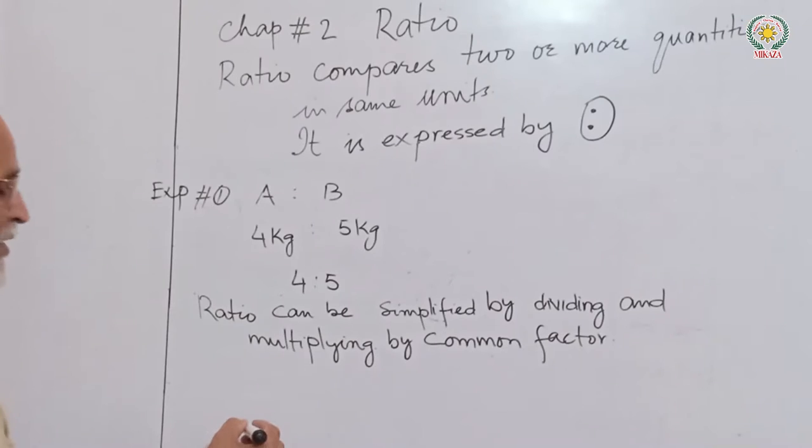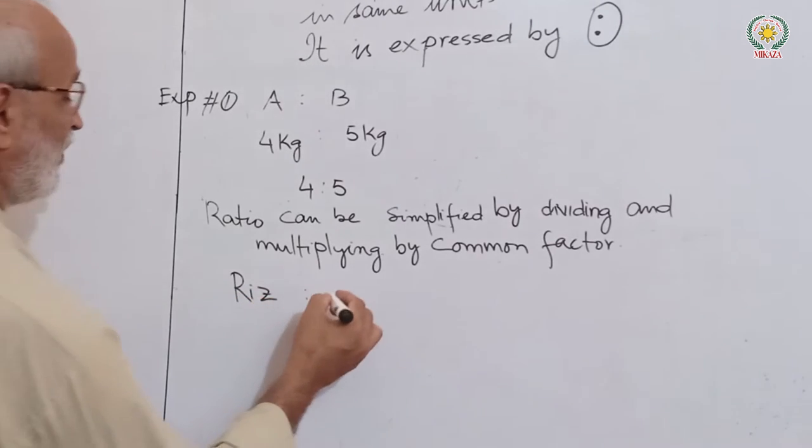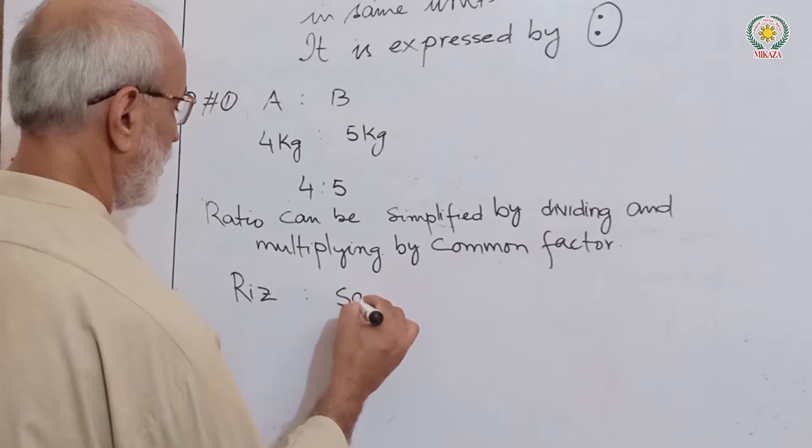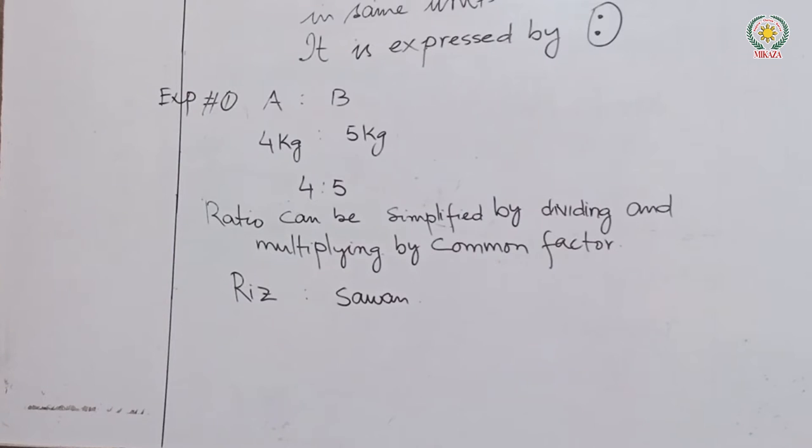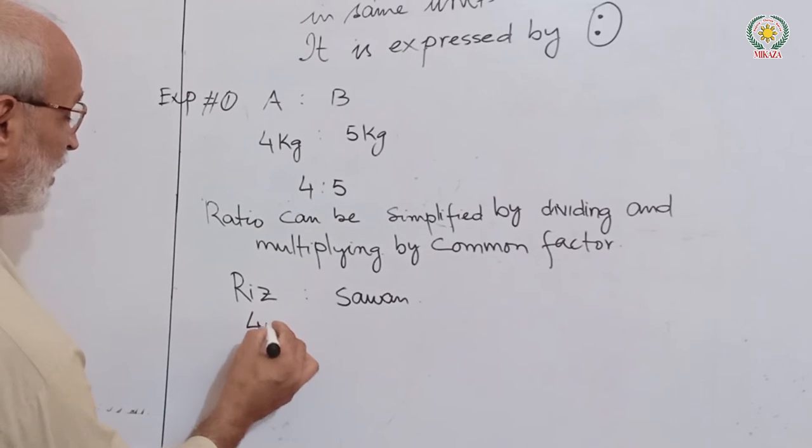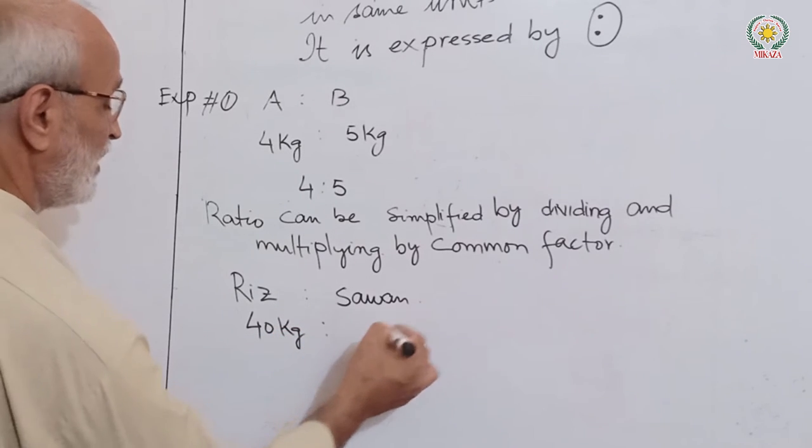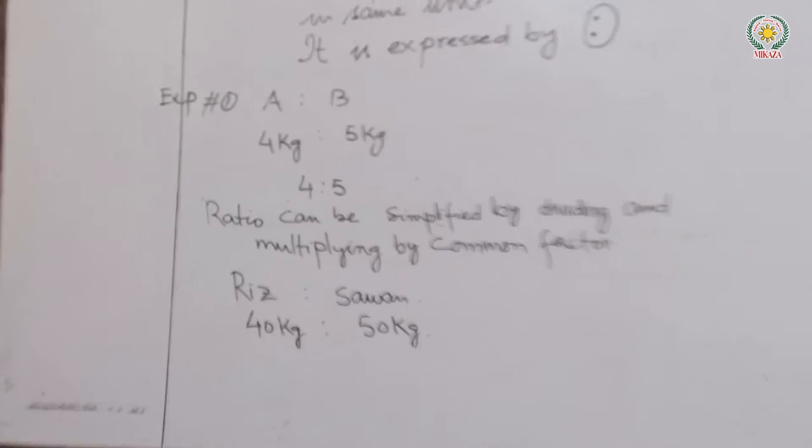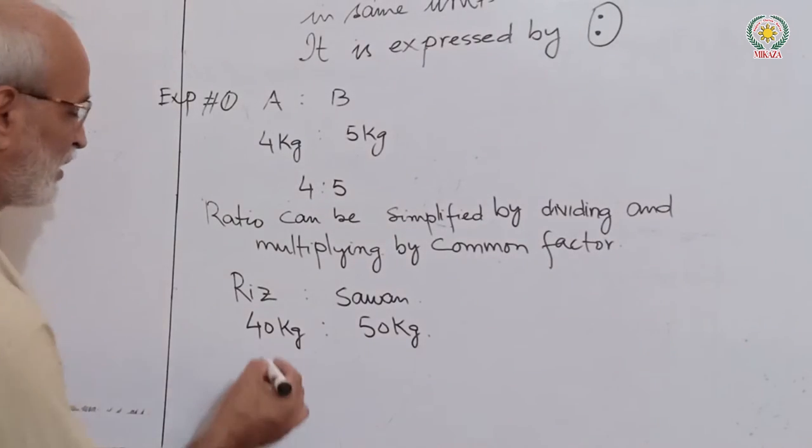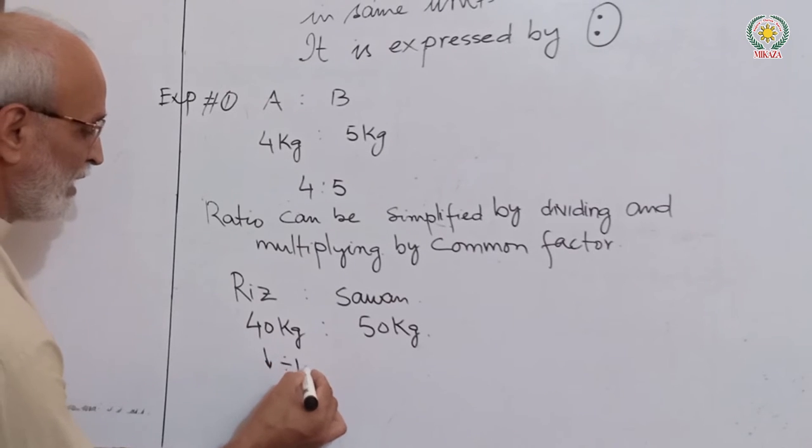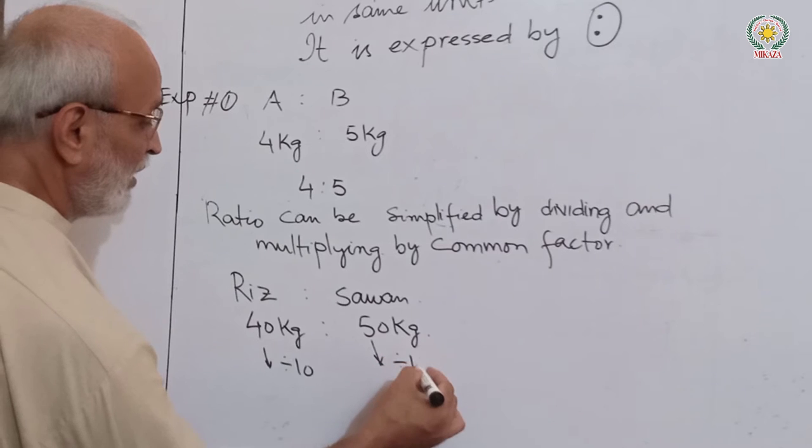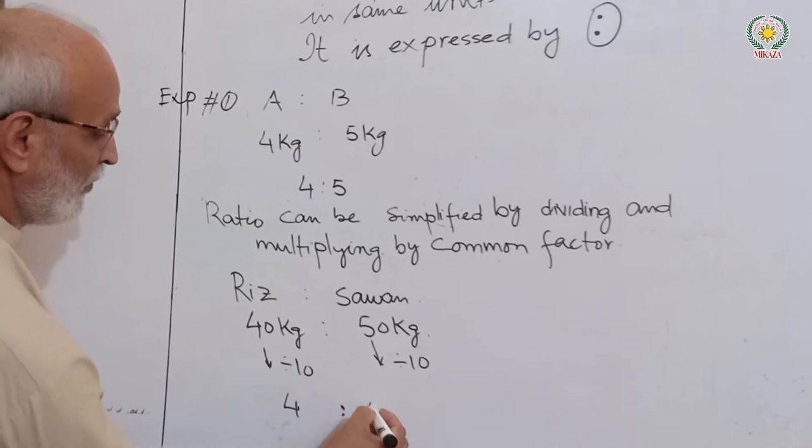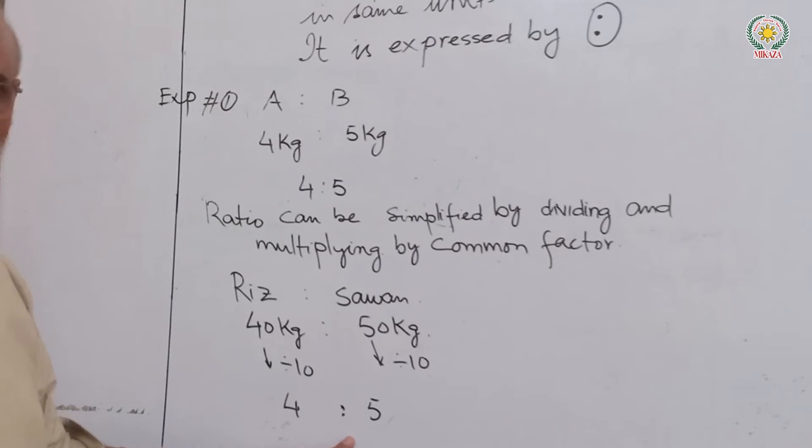Let me give you the first example with Savan. If one weight is 40 kg and another is 50 kg, we write the ratio as 40:50. Now we simplify by dividing both by 10. 40 divided by 10 is 4, and 50 divided by 10 is 5. So our answer is 4:5.